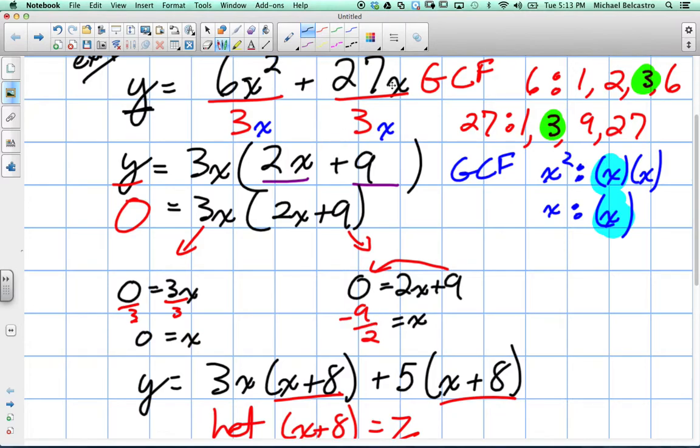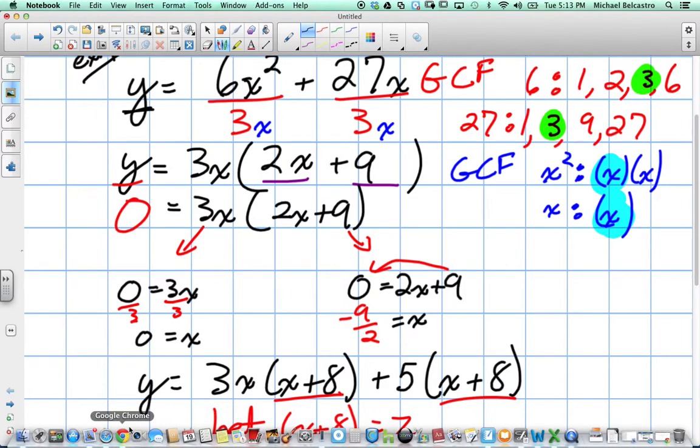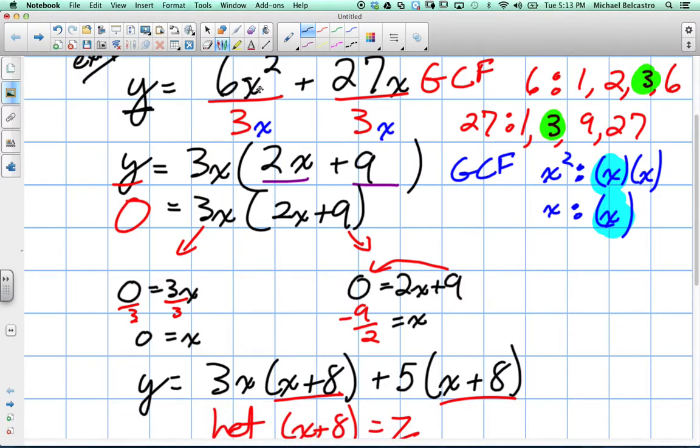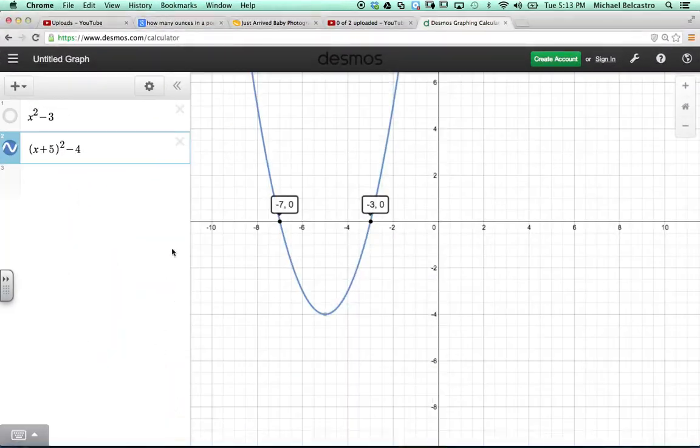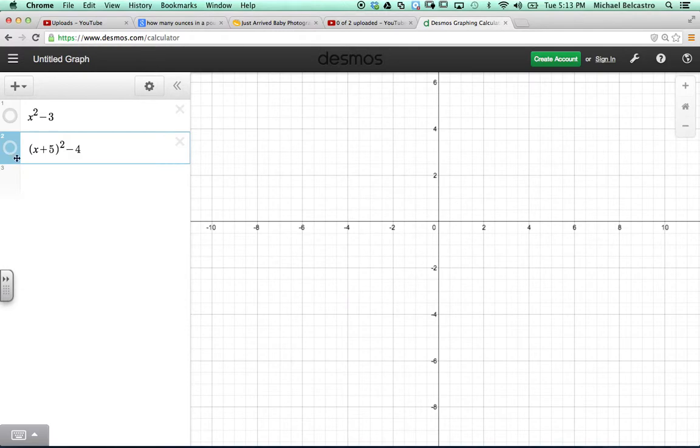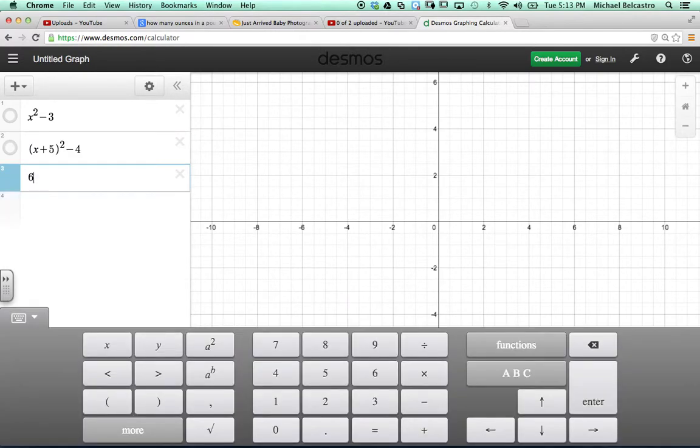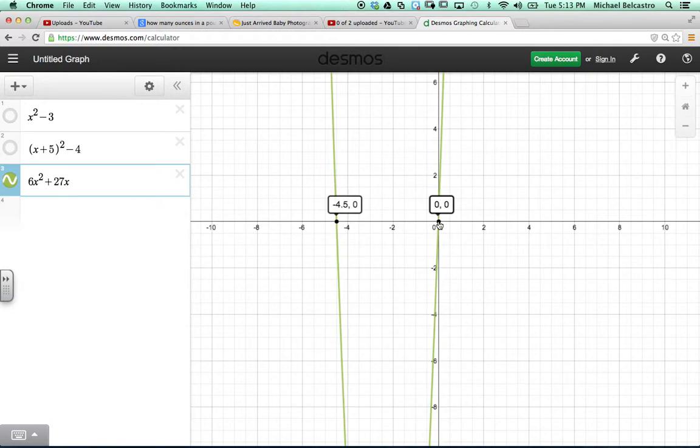And if I type this into an equation, which I'm going to do in a second, that'll show us that. So the equation was 6x squared plus 27x. So our x-intercepts should be at negative 4.5 and zero. Exactly what we got. So we found our two x-intercepts.